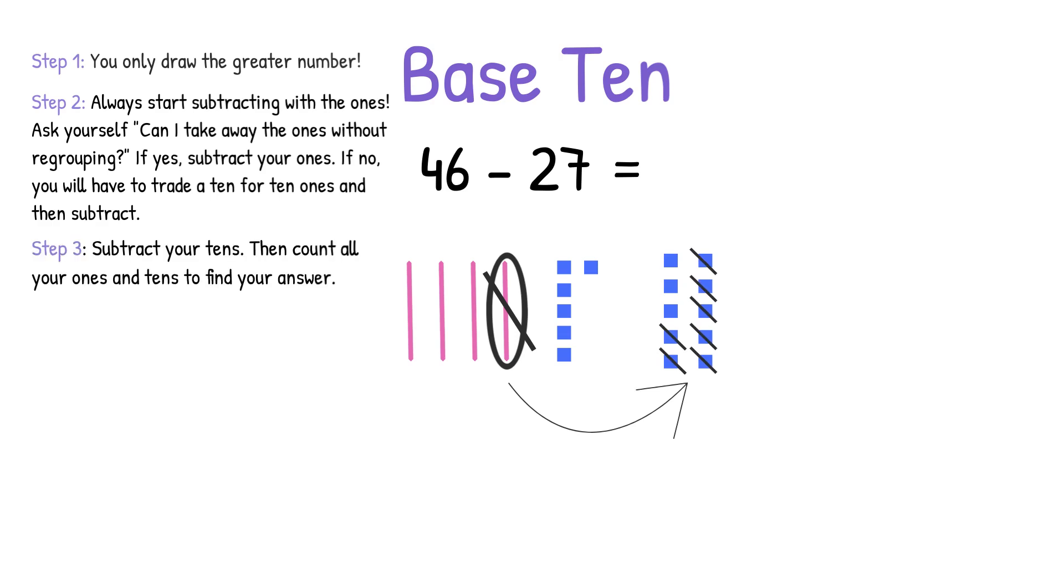Step three, subtract your 10s. Then count all your 1s and 10s to find your answer. In this equation we have to take away two 10s, so we'll cross out two 10s and then see what we have left. We have one 10 left and nine 1s, so that makes our answer 19.